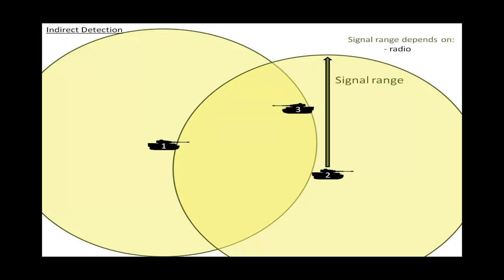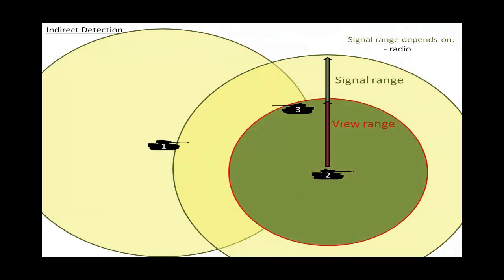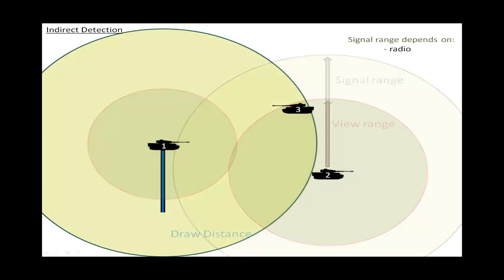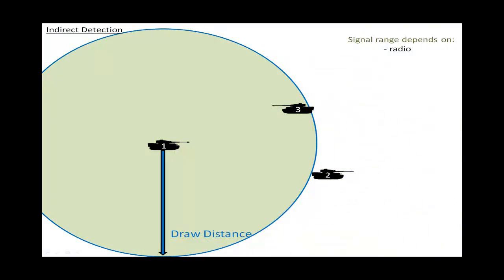An enemy tank enters your friend's view range and gets detected. The enemy tank is obviously out of your view range. But since you and your ally are within signal range, the enemies your friend detects are also visible to you. As long as the distance between you and your ally is less than the sum of both your signal ranges, you will see every tank he detects on the minimap. If the enemy tank is within your draw distance, you can even see this enemy on the field. Your view range doesn't matter in this case, only your draw distance.